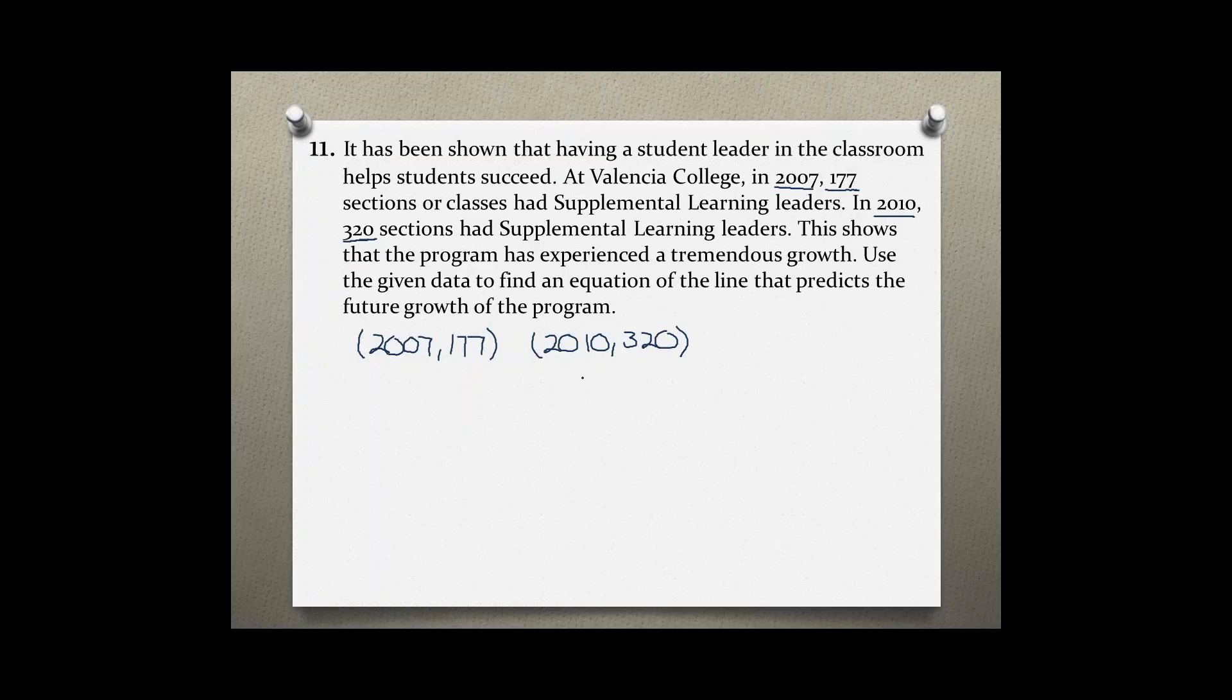When we are given two points, we can use the slope formula which is m equals y2 minus y1 over x2 minus x1 to find the slope first. So let's label our points x1, y1 and x2, y2. Now we can plug these points into the formula which gives us 320 minus 177 over 2010 minus 2007. Simplifying the numerator leaves us with 143 and simplifying the denominator leaves us with 3.